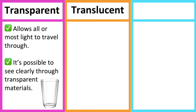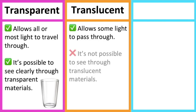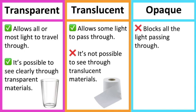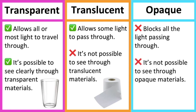Translucent refers to a material that allows some light to pass through. It's not possible to see through translucent materials — for example, tissue paper. Opaque refers to a material that blocks all light passing through. It's not possible to see through opaque materials at all — for example, wood. Opaque materials create shadows when they block light.